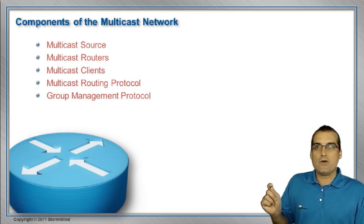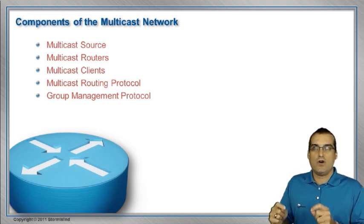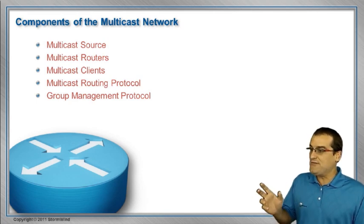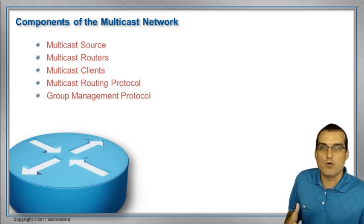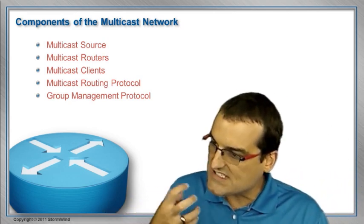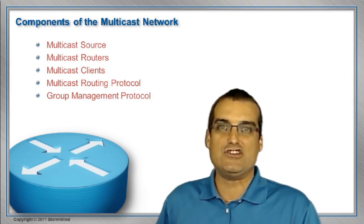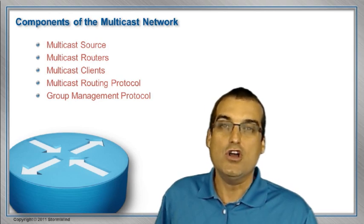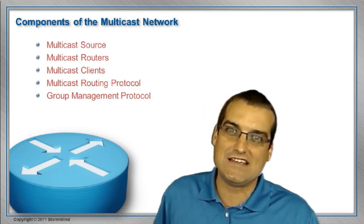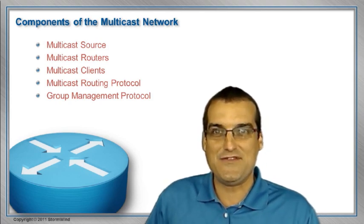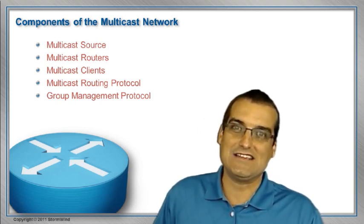If we have multicast routers, we need a way to route multicast traffic from router to router. So we'll talk about a multicast routing protocol that we're going to use. And finally, clients need a way in which to signal that they want to participate, that they want to receive this multicast information. So we need some kind of a group management protocol, some way for client systems to be able to announce, hey, I want my MTV. I want my multicast feed.